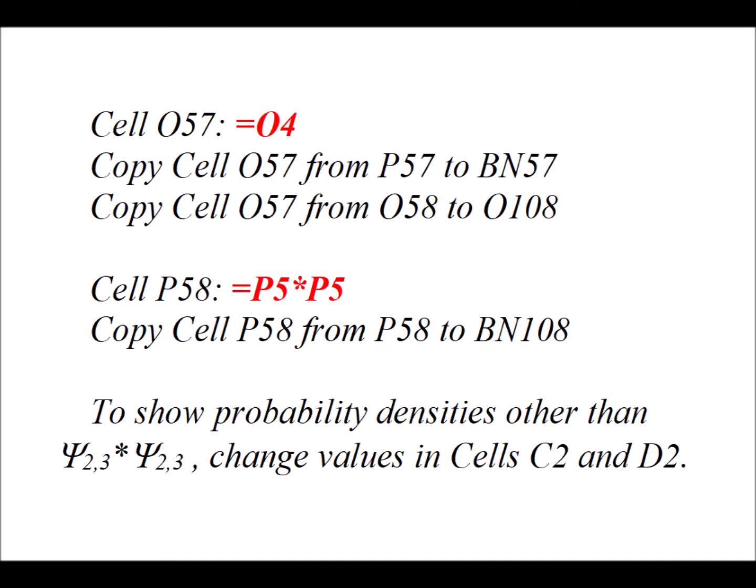Now if we want to visualize the probability density, the probability that the particle would be in a particular location, first in cell O57, we type in the formula equals O4, then we copy that cell O57 from P57 to BN57, copy cell O57 from O58 to O108, and then finally in cell P58, we type in the formula equals P5 times P5. This is taking the wave function and multiplying it by itself. So this is psi star psi effectively. Then we copy cell P58 from P58 to BN108.